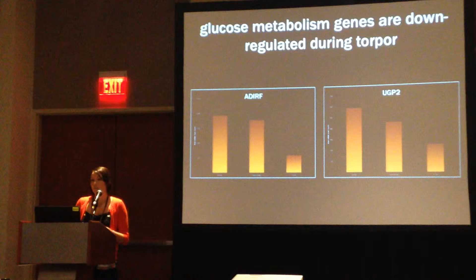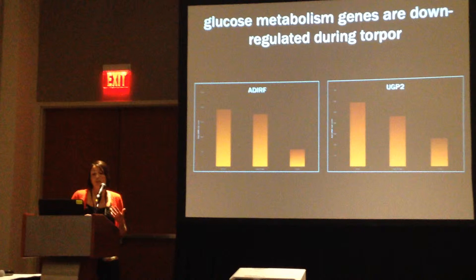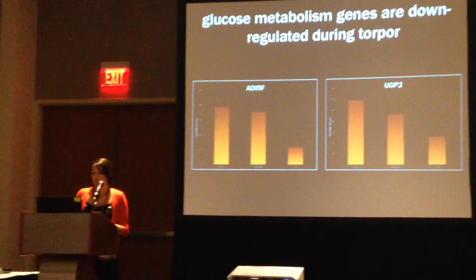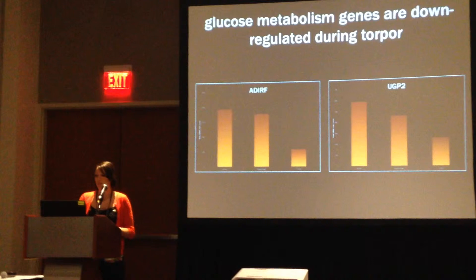Conversely, we find that genes involved in glucose metabolism are downregulated. ADIRF is a pro-adipogenesis factor, and interestingly, it is overexpressed in human obesity patients. UPG2 is involved in carbohydrate conversions, directly contributing to glucose metabolism.